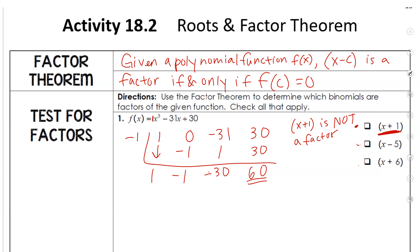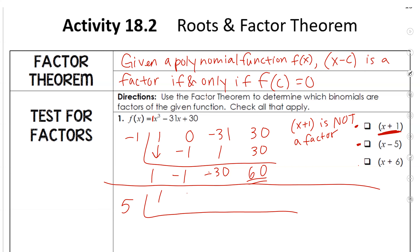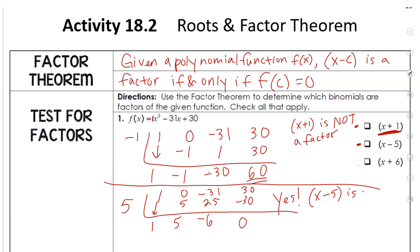Let's test x minus 5. Put a positive 5 outside. Same coefficients: 1, 0, negative 31, 30. Bring down the 1. 5 times 1 is 5. This will be 5, then 25, then negative 6, then negative 30. The remainder is 0, so x minus 5 is a factor.